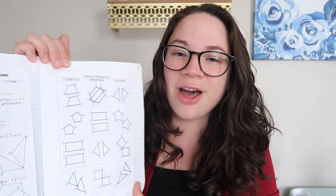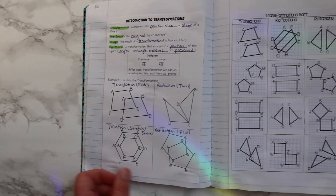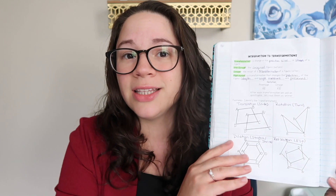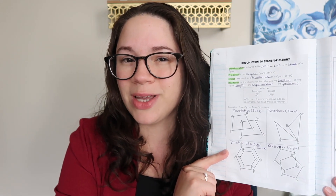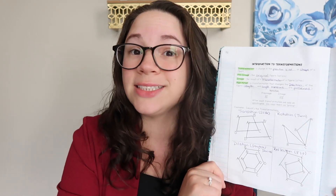We start with an introduction to transformations. We have definitions: transformation, pre-image, image, and rigid motion — which is such a weird word. I don't know if it's something that is used really in other areas. We talk about the notation, which is using primes when we do a transformation. Then I show students an image and ask them to identify the different transformations, and we come up with the main words: translation, reflection, rotation, and dilation.